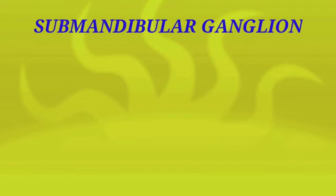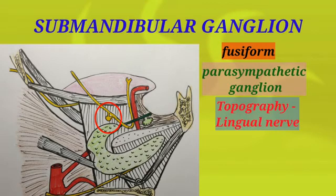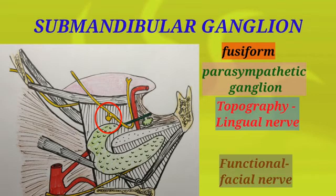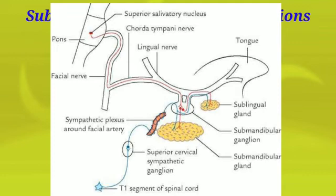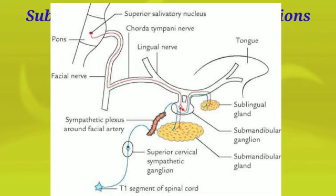The submandibular ganglion is a small fusiform peripheral ganglion belonging to the parasympathetic system. Topographically it is connected to the lingual nerve through two roots — an anterior root and a posterior root — but functionally it is connected to the facial nerve and its chorda tympani branch. The parasympathetic secretomotor innervation for the submandibular gland arises from the superior salivatory nucleus in the pons, which gives out the preganglionic fibers. These fibers pass through the facial nerve and the chorda tympani, and through the lingual nerve they enter and relay in the submandibular ganglion. The ganglion gives out postganglionic fibers which pass through the anterior root into the lingual nerve and finally innervate the gland. The sympathetic nerves arising from the superior cervical ganglion wind around the facial artery to provide secretomotor innervation and also vasomotor supply to the gland.